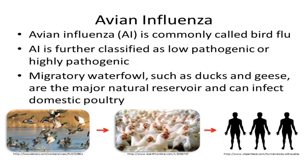Three prominent subtypes of avian influenza A viruses known to infect both birds and people are the subtypes H5, H7, and H9. Avian influenza viruses are often classified based on pathogenicity, which refers to their ability to produce disease in birds. Low pathogenic viruses are responsible for causing mild disease in birds, while highly pathogenic viruses are responsible for causing severe disease in birds.